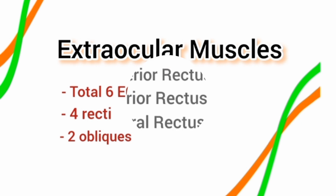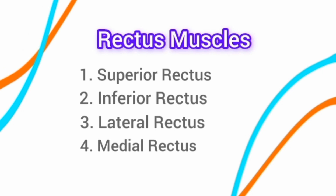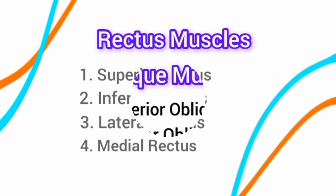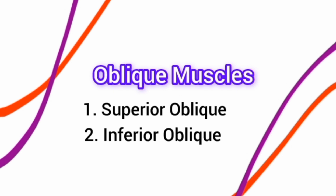The four recti muscles are the superior rectus, inferior rectus, lateral rectus, and medial rectus. The two oblique muscles are the superior oblique and the inferior oblique.